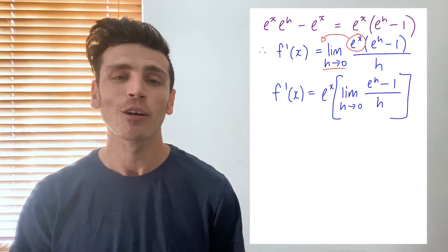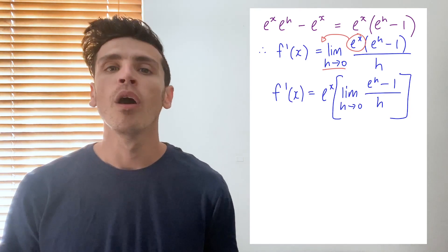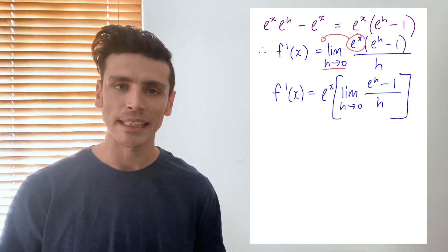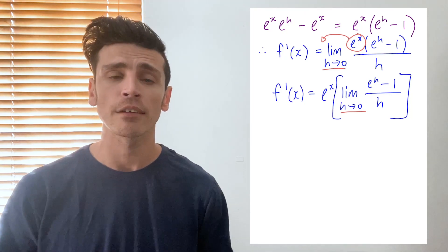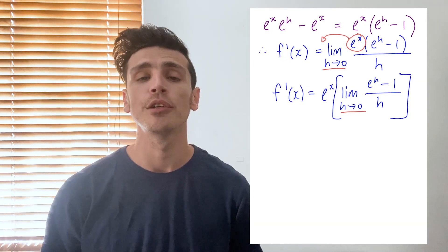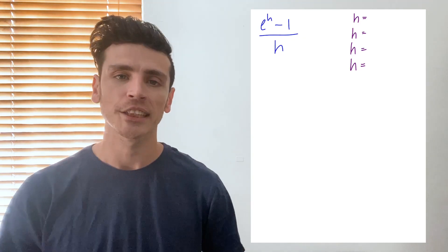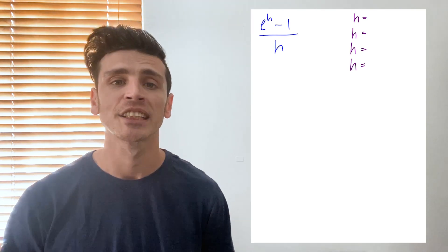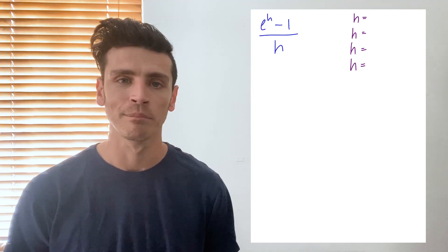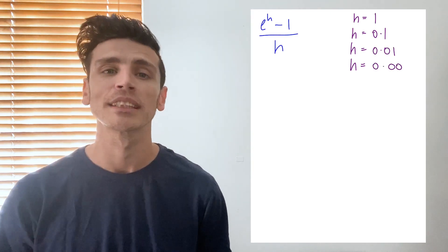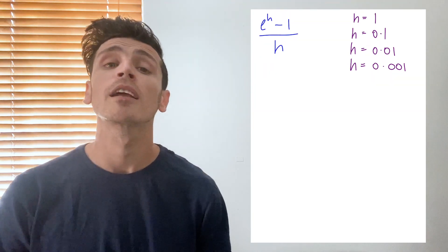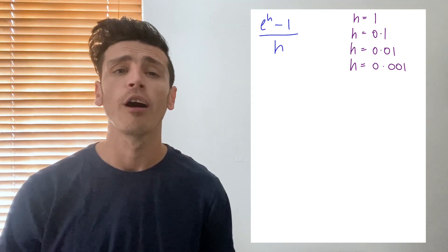Now we need to solve this limit. A limit looks at what a value tends towards. We can see our limit says as h approaches 0, but if we put h equals 0 into that fraction we'd be dividing by 0, which is a mathematical error. So we'll put values of h getting closer and closer to 0 to see what our fraction gives us. The fraction is e to the power of h minus 1 divided by h, and we'll first look from the positive side using h equals 1, h equals 0.1, h equals 0.01, and h equals 0.001.